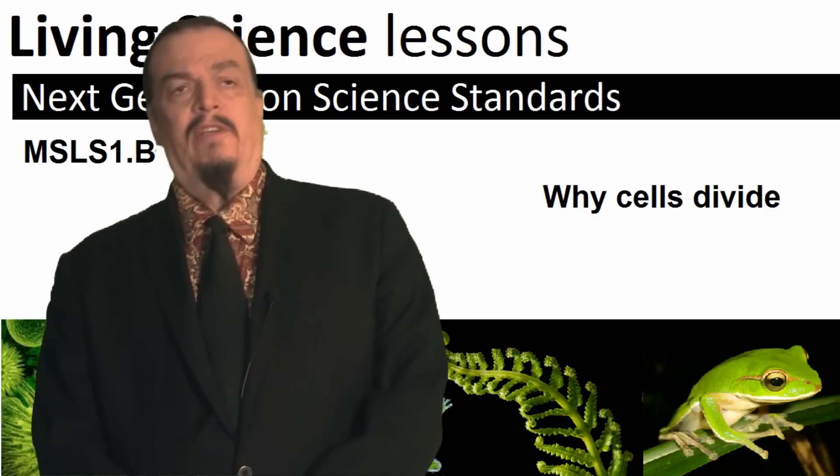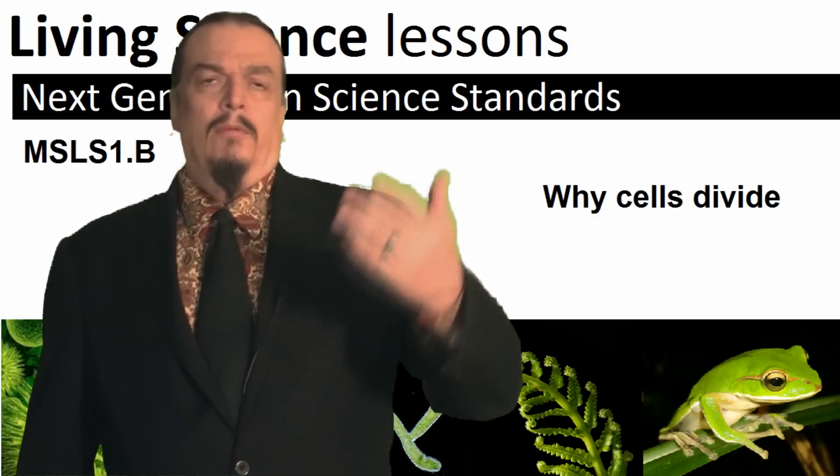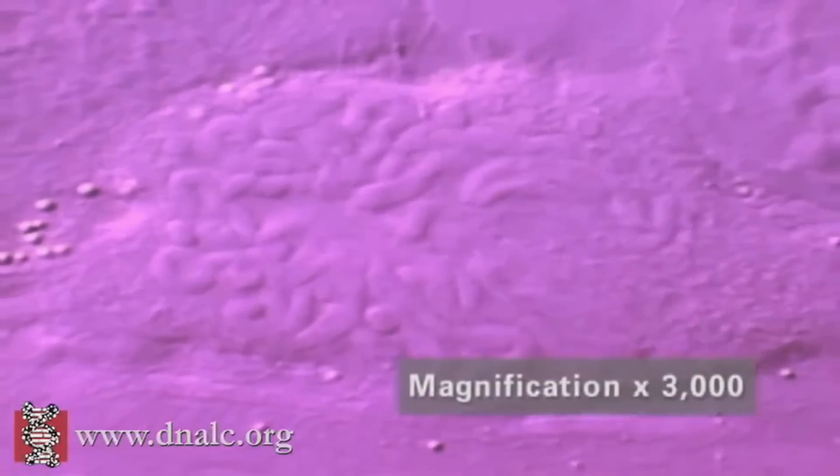Hi, I'm Aaron from Living Science Videos. Remember the difference between living and non-living things? Living things, or organisms, are made of one or more cells, respond to stimuli, maintain homeostasis or a stable internal environment, metabolize energy, grow, reproduce, and evolve. Today we're going to look at the way living things like your cells grow, repair themselves, and reproduce.